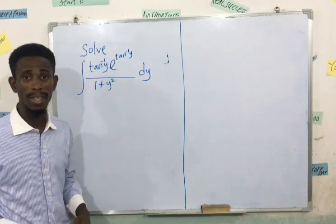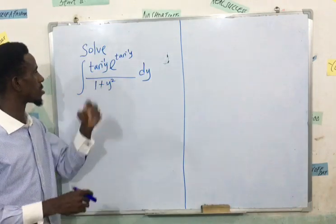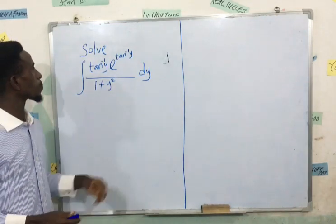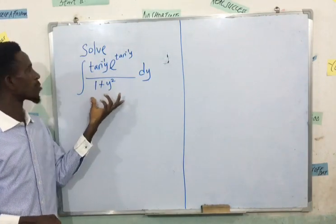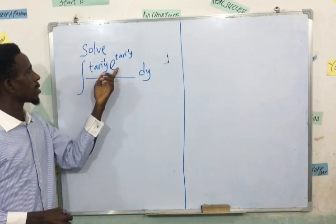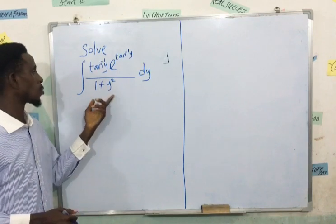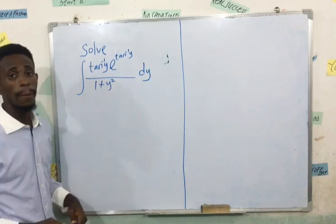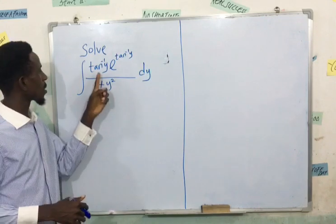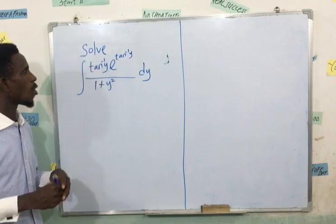Hello guys and welcome back to class. Today we are going to be looking at the integration of this function here. This is: solve the integral of inverse tan of y, exponential inverse tan of y, all over 1 plus y squared dy.